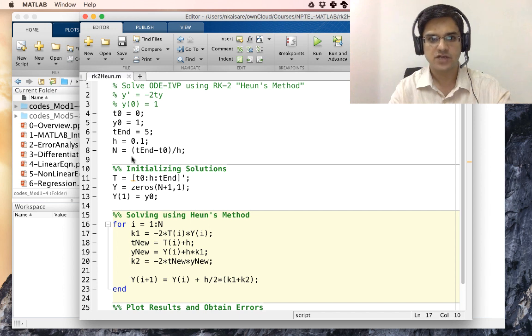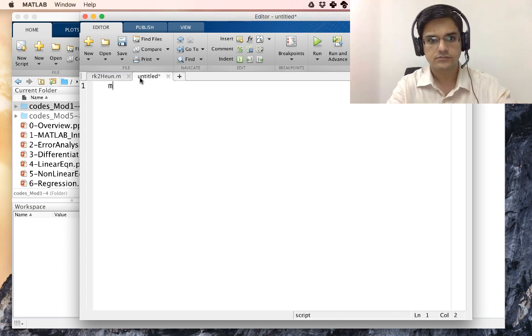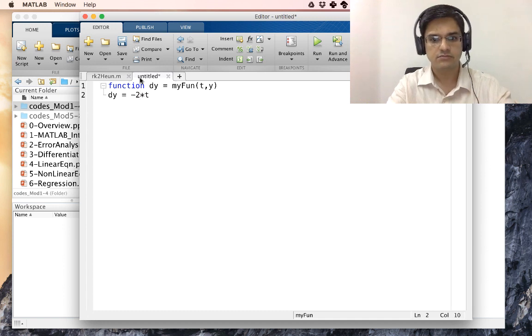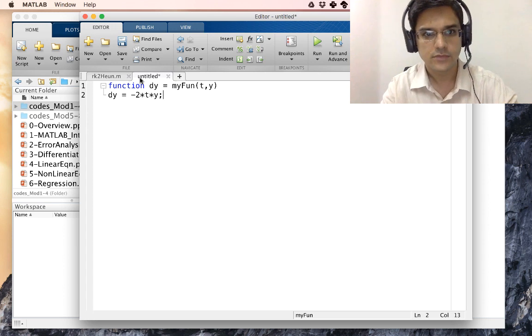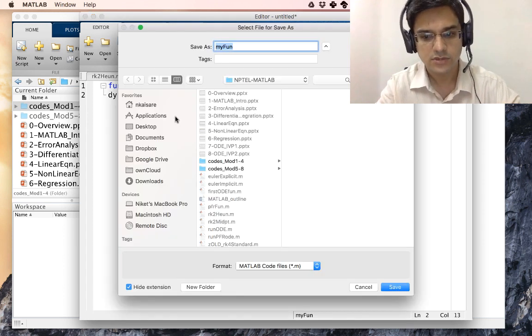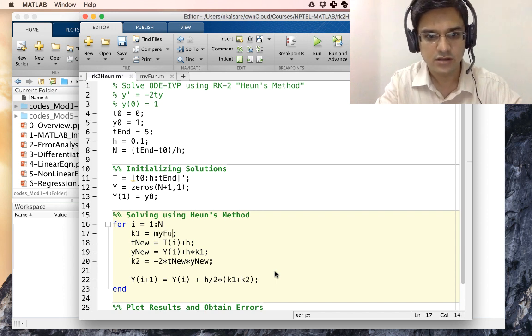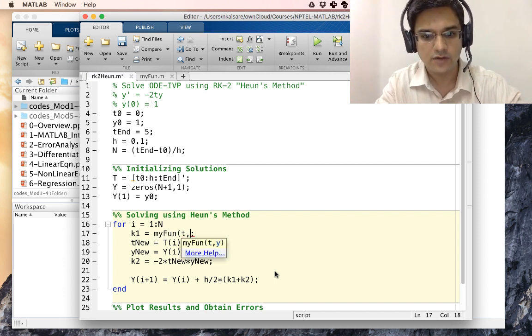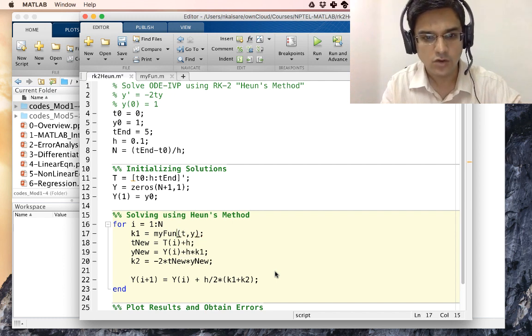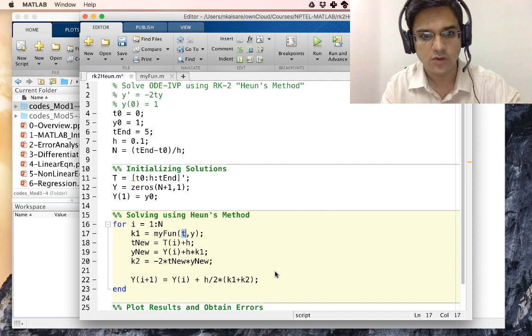So let us first create a function MYFUN. Function dy equal to MYFUN t comma y and dy equal to minus 2 multiplied by t multiplied by y. Let us save this as MYFUN. So k1 should be replaced by MYFUN t comma y. Right now k1 is basically going to be t i comma y i.